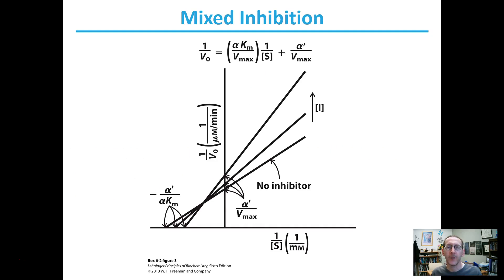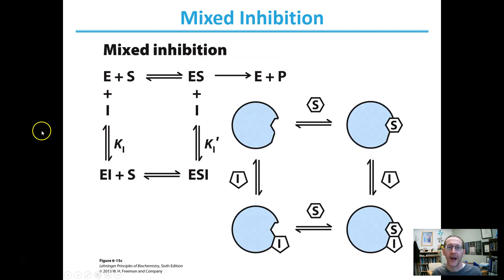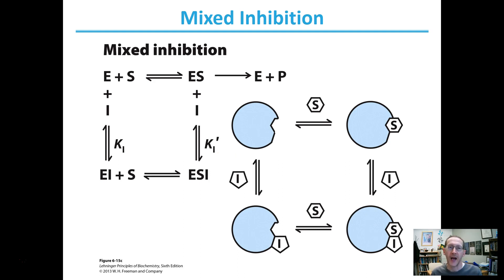If you end up with mixed inhibition, you can calculate either a KI or a KI-prime, or both. On this skill exercise, I don't care which one you do — if you do both, kudos to you. This is a good way to determine alpha from your equations of straight lines and to find KI or KI-prime. I hope it's been helpful — cheers!